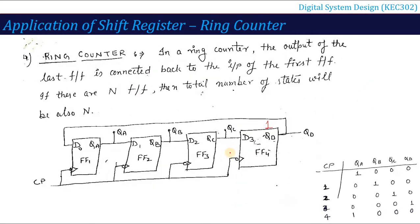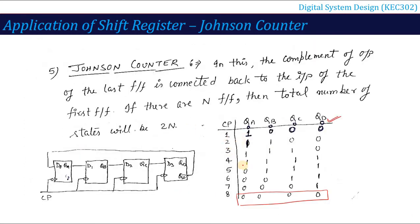In summary: in the ring counter, we connect the last flip-flop's output directly to the first flip-flop's input, and the number of states equals N. In the Johnson counter, we connect the complement of the last flip-flop's output to the first flip-flop's input, and the total number of states equals 2N. These are the ring counter and Johnson counter as applications of shift registers.